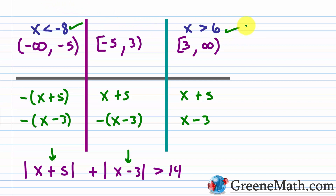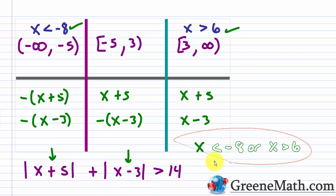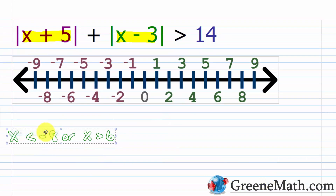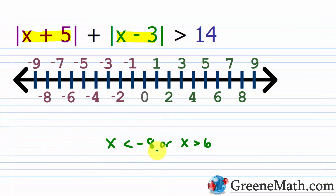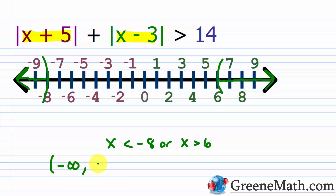Combining both partial solutions: x is less than negative eight, or x is greater than six. Graphically, put a parenthesis at negative eight and shade everything to the left, and put a parenthesis at six and shade everything to the right. In interval notation: from negative infinity to but not including negative eight, union with anything larger than six.